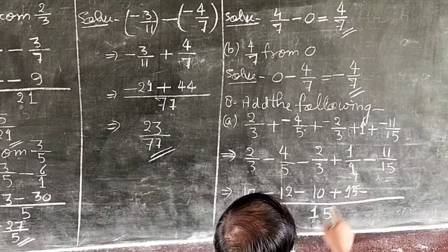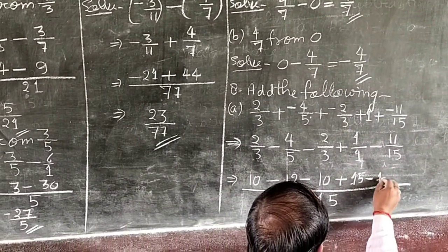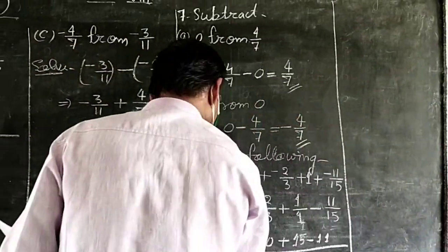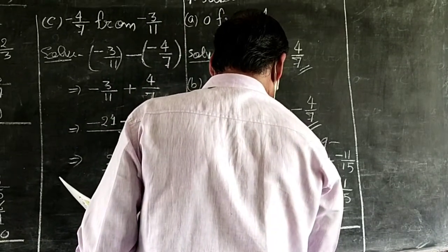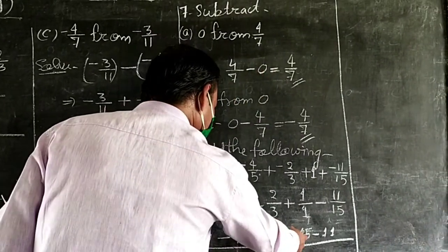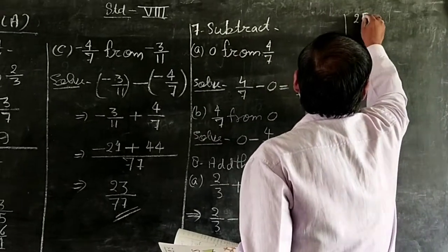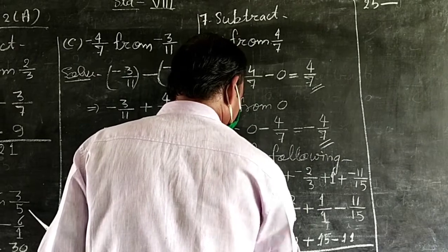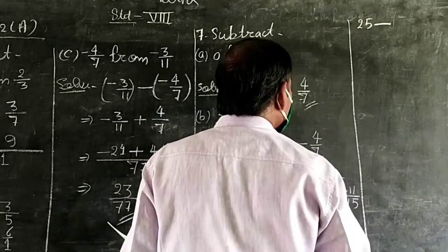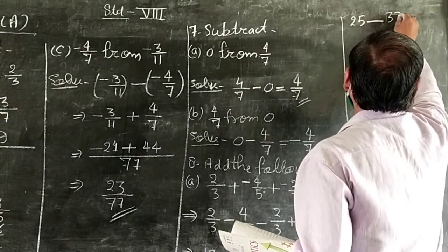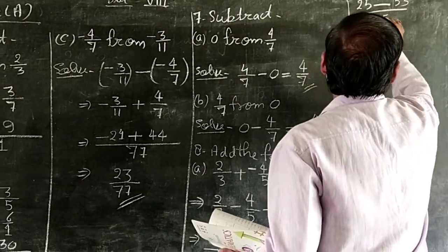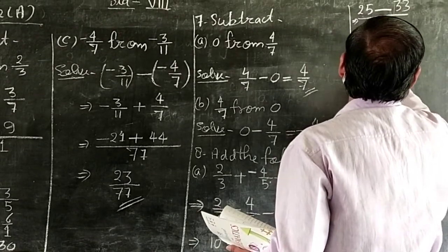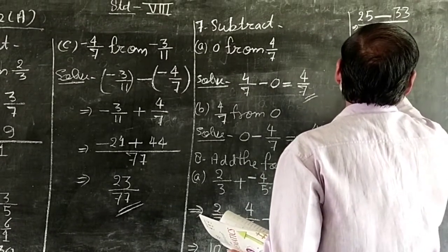Now calculating: 10 plus 15 equals 25, minus 12 minus 10 minus 11 equals minus 8 upon 15. Answer.